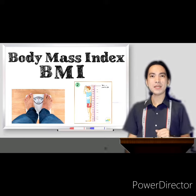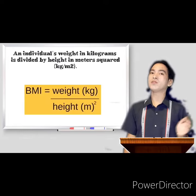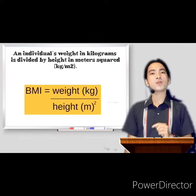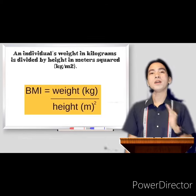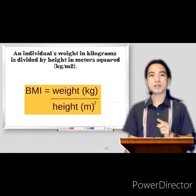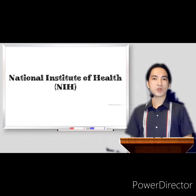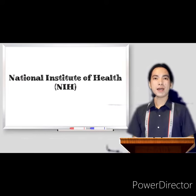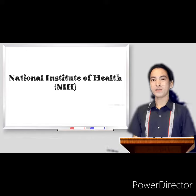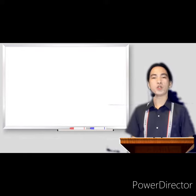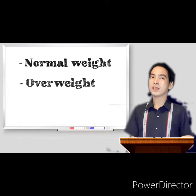To calculate the Body Mass Index, an individual's weight in kilograms is divided by height in meters squared, or kg/m². The National Institute of Health uses BMI in place of the conventional height-weight charts to categorize persons into normal weight, overweight,